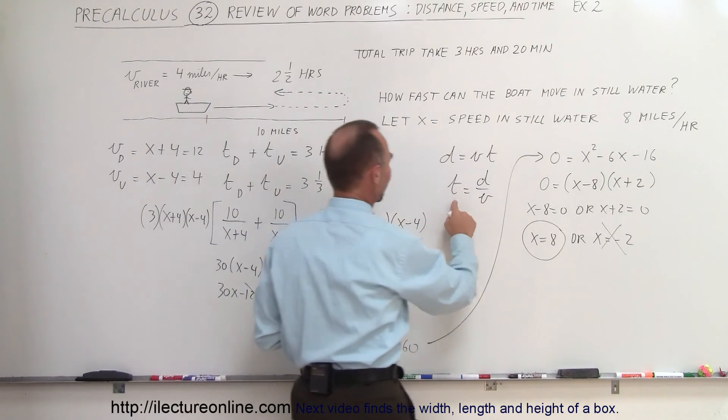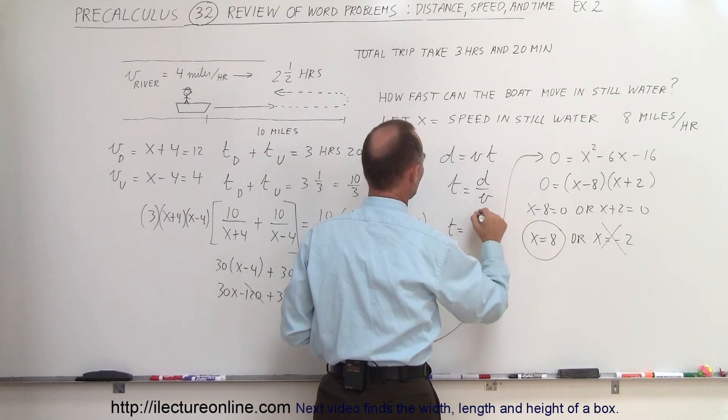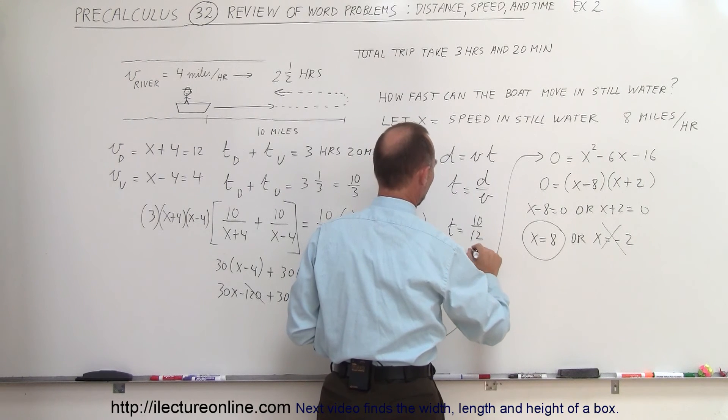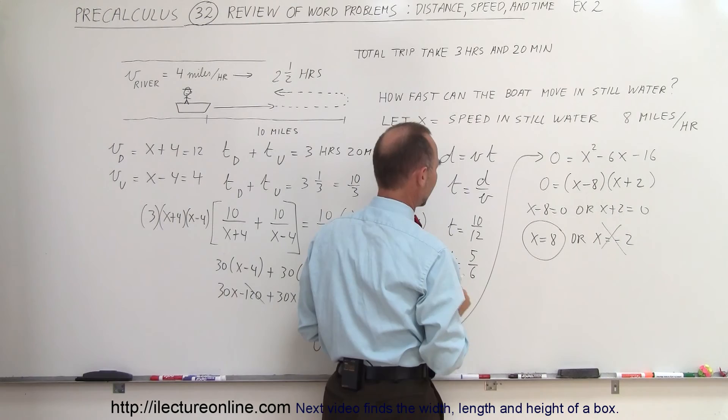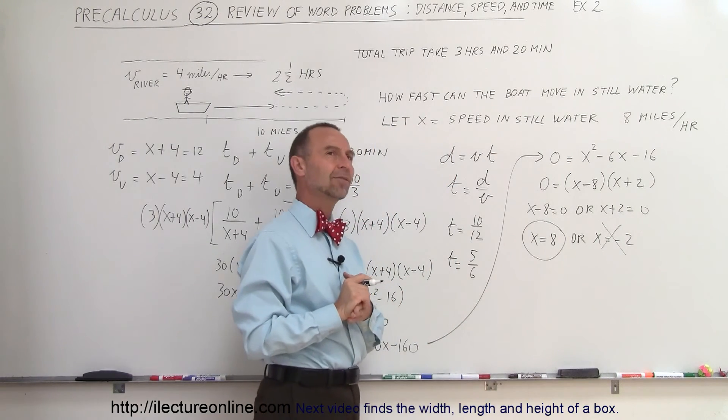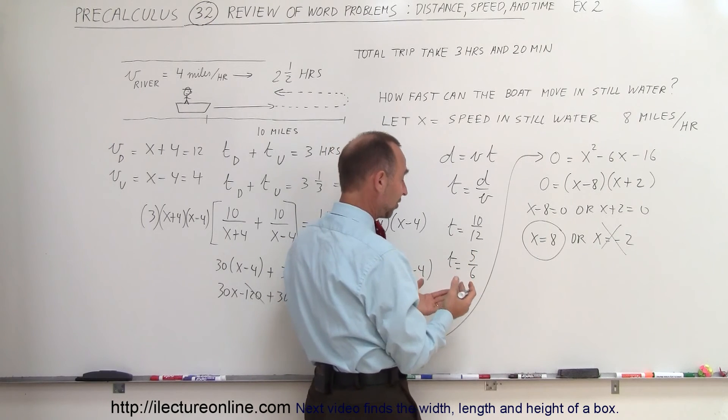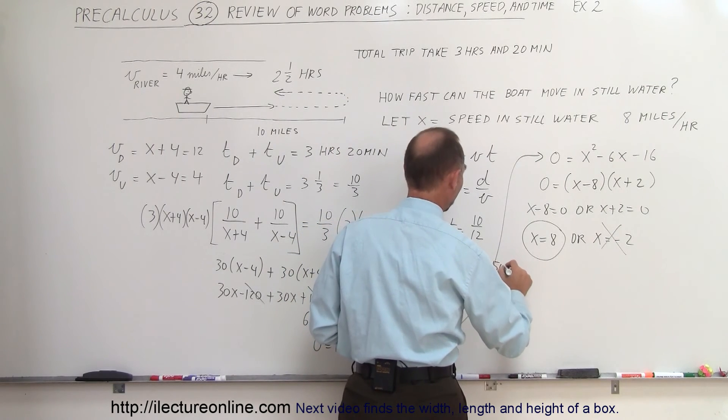So here let's find the time, the time is equal to 10 divided by 12, so the time is equal to 5 divided by 6. 5 divided by 6, that would be 50 minutes, because there's 60 minutes in an hour, 5/6 of 60 minutes is 50 minutes.